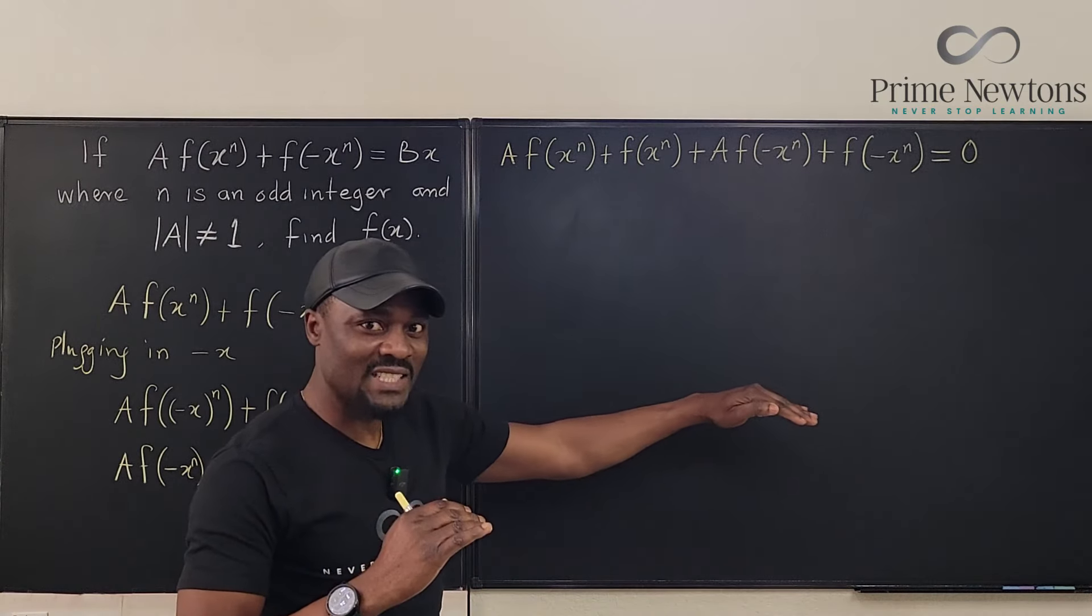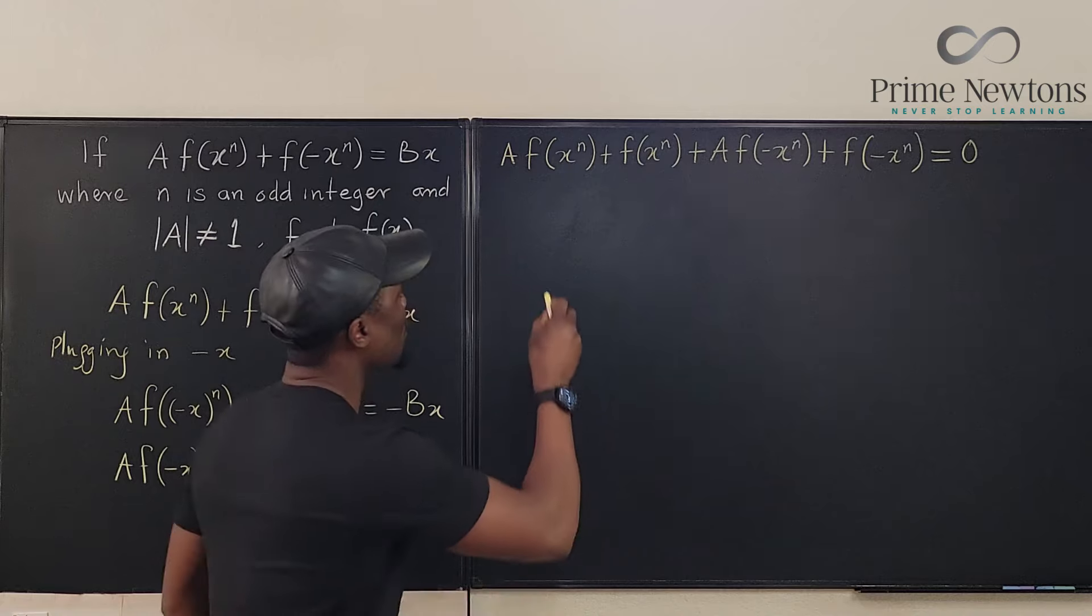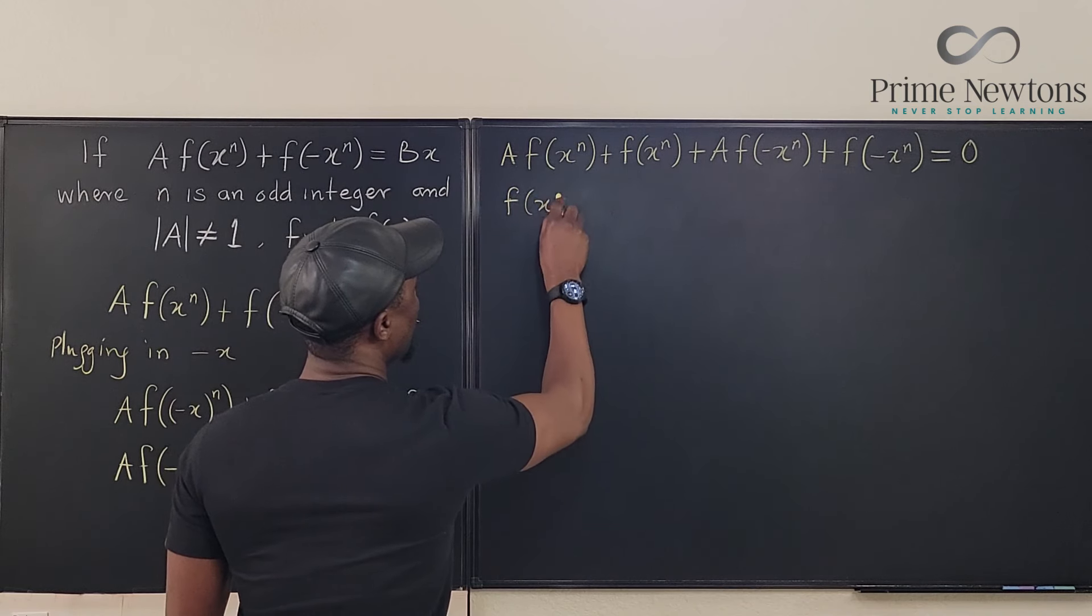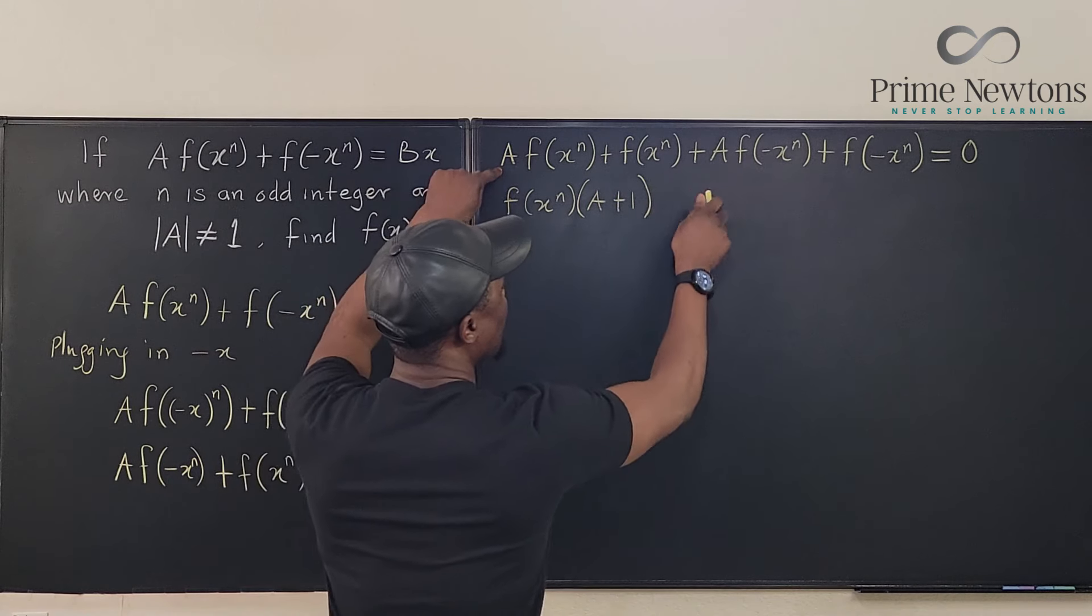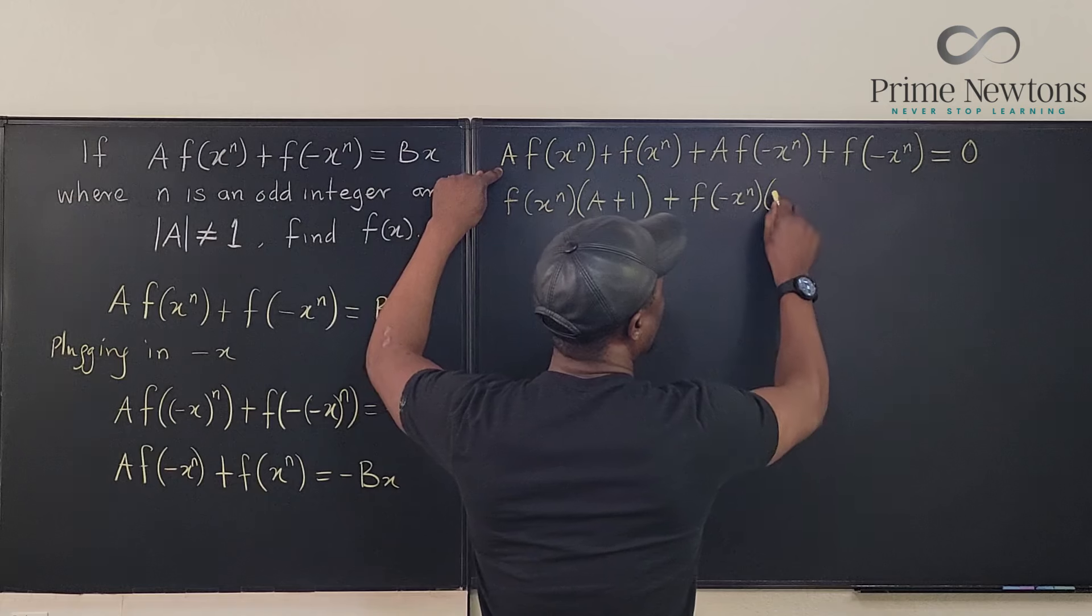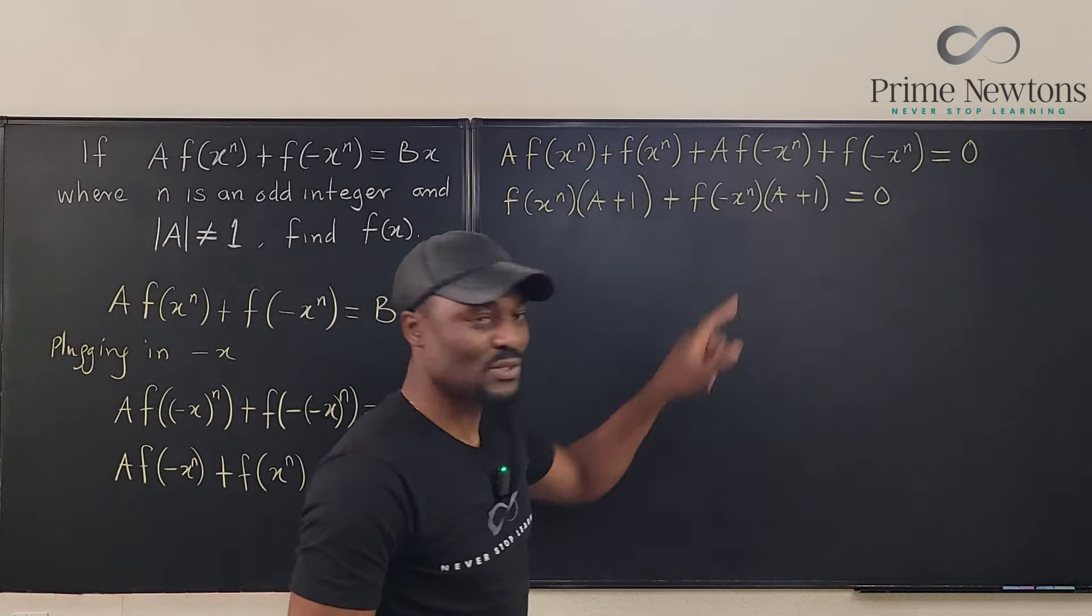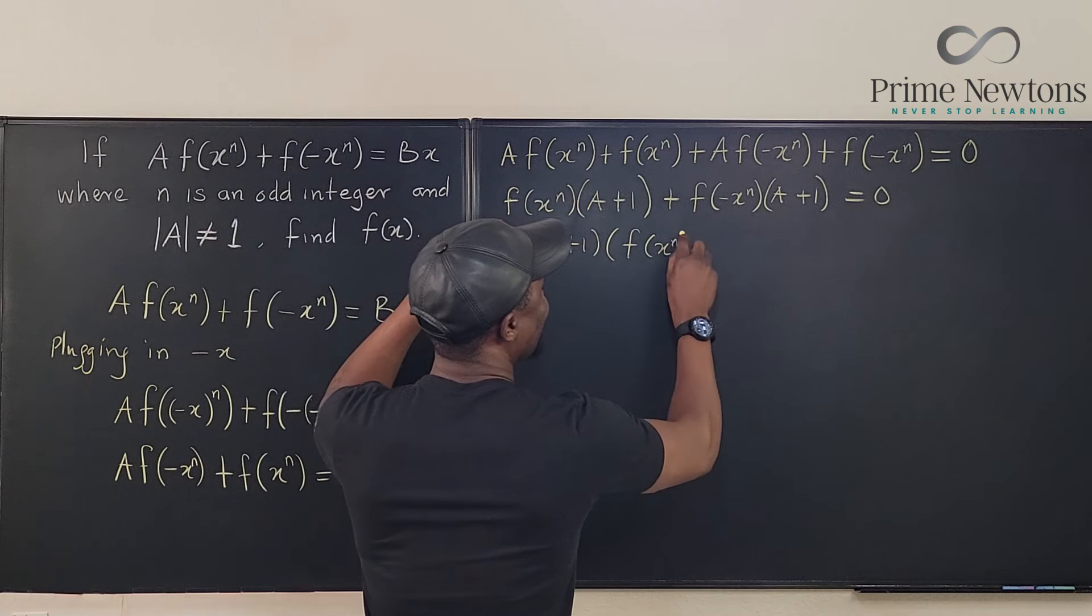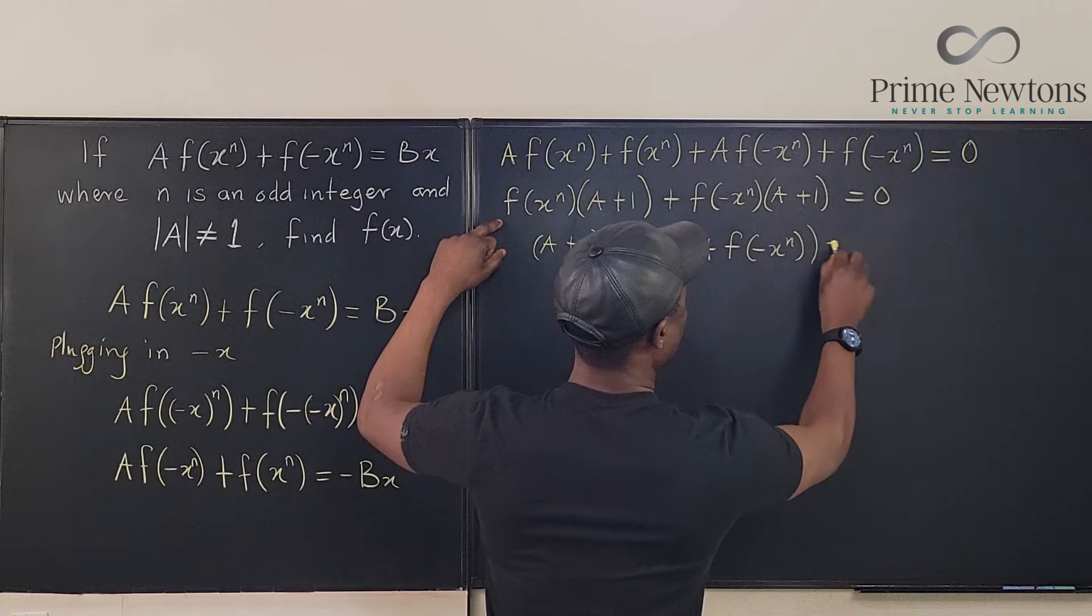Now, just by writing out those lines, I can easily see that I can factor f(x)^n. So I have, let's take out f(x)^n. f(x)^n, I'm going to be left with A plus 1 from these two, and I'll do the same thing, plus f(-x)^n times A plus 1 equals zero. So this looks like you factored a quadratic, so I can take out A plus 1. So I have A plus 1 times f(x)^n plus f(-x)^n equals zero.